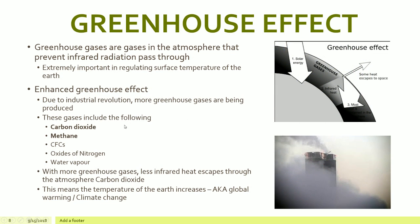The greenhouse gases are gases in the atmosphere that prevent infrared radiation from passing through, which regulates the surface temperature of the earth. We need some of these gases trapping heat, otherwise the earth would be too cold. However, due to the industrial revolution, more greenhouse gases are being produced than needed — gases like carbon dioxide, methane, CFCs, oxides of nitrogen, and water vapor (you mainly need to know CO₂ and methane). This captures more heat in the atmosphere, the temperature of the earth gradually rises — we call that climate change or global warming — and ice is melting around the world.